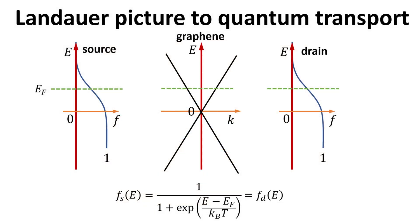We depict the graphene electronic structure in the middle panel, accompanied by the Fermi-Dirac distributions in the source and drain metallic contacts. The green dashed lines denote the Fermi level, which are all aligned at the same energy since the system is at equilibrium when there is no applied bias across the device.